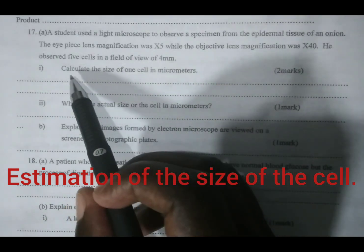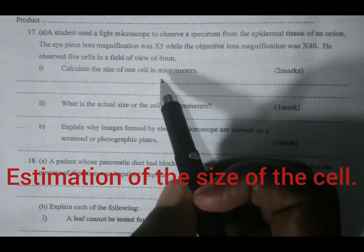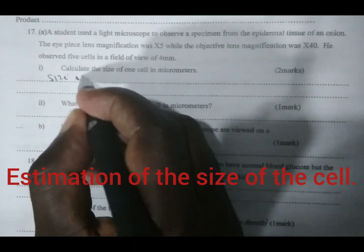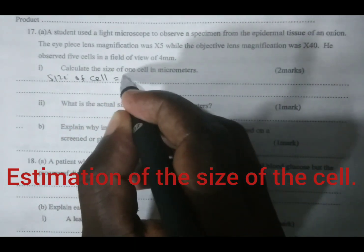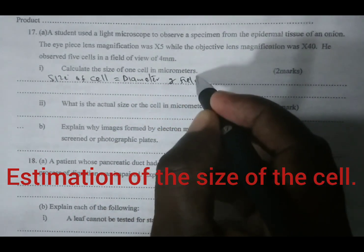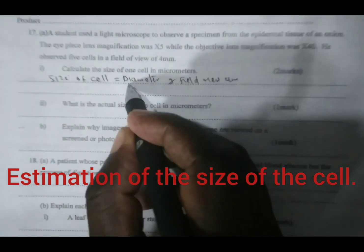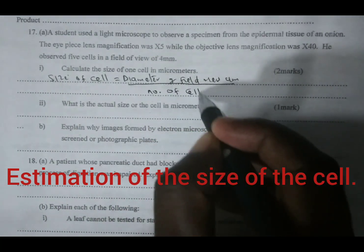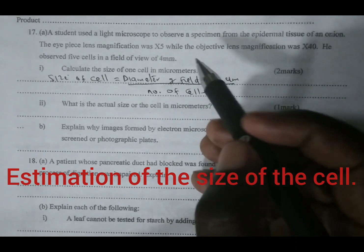The first part of the question: calculate the size of one cell in micrometers. We know to get the size of one cell, we take the diameter of field of view in micrometers.